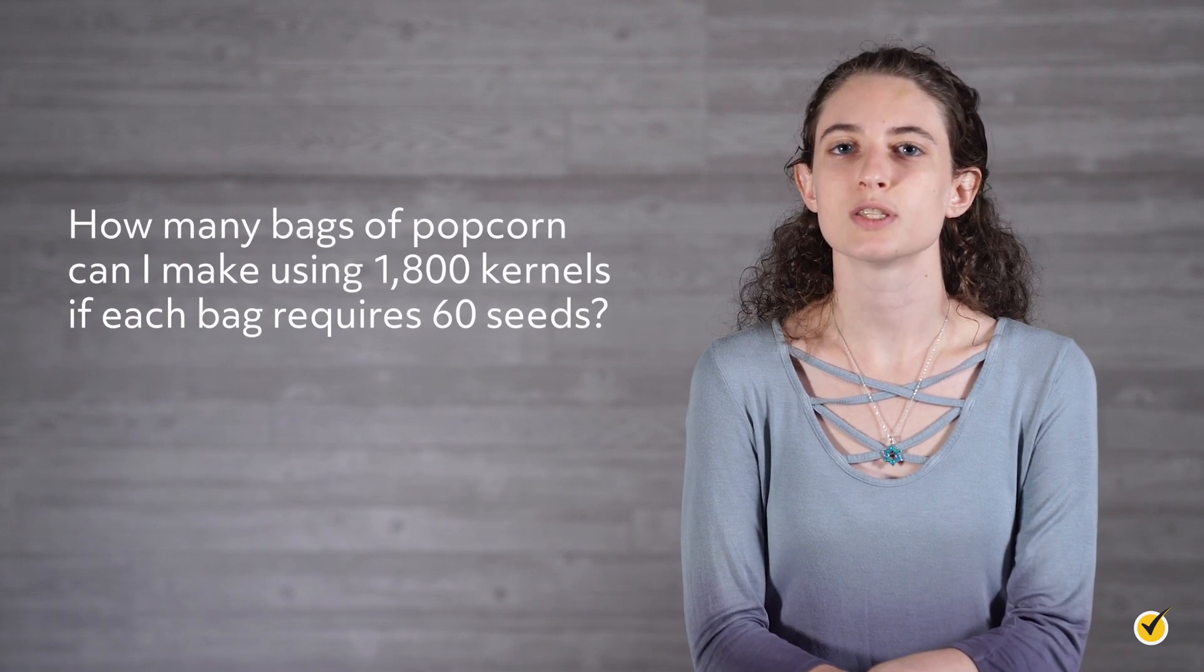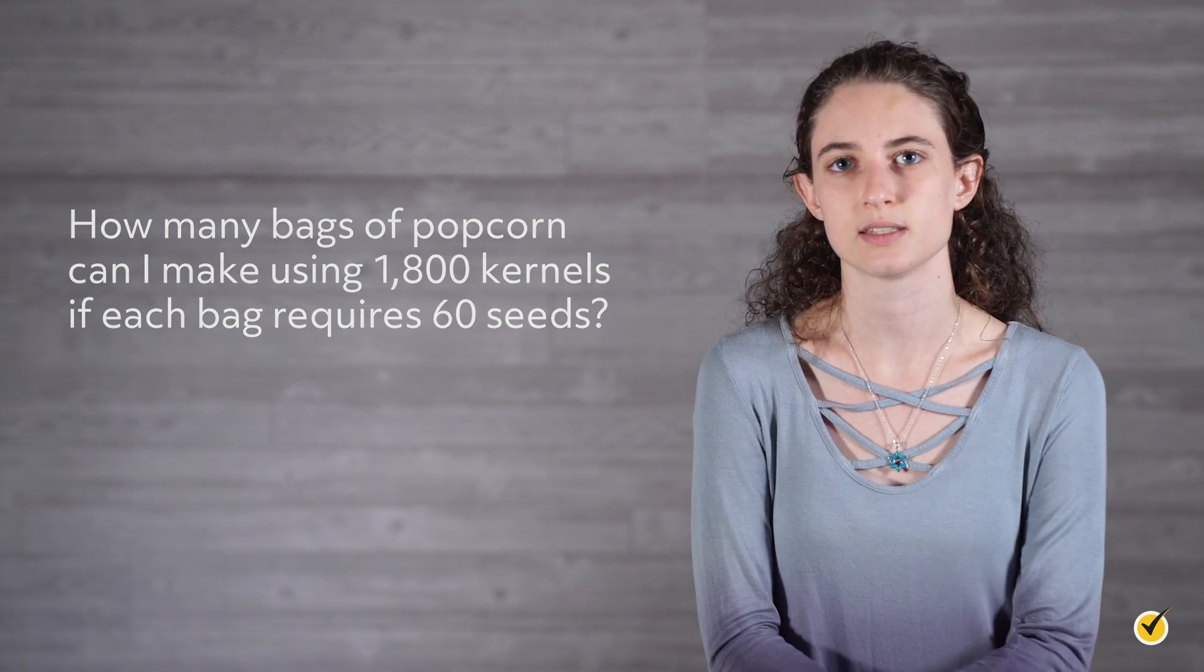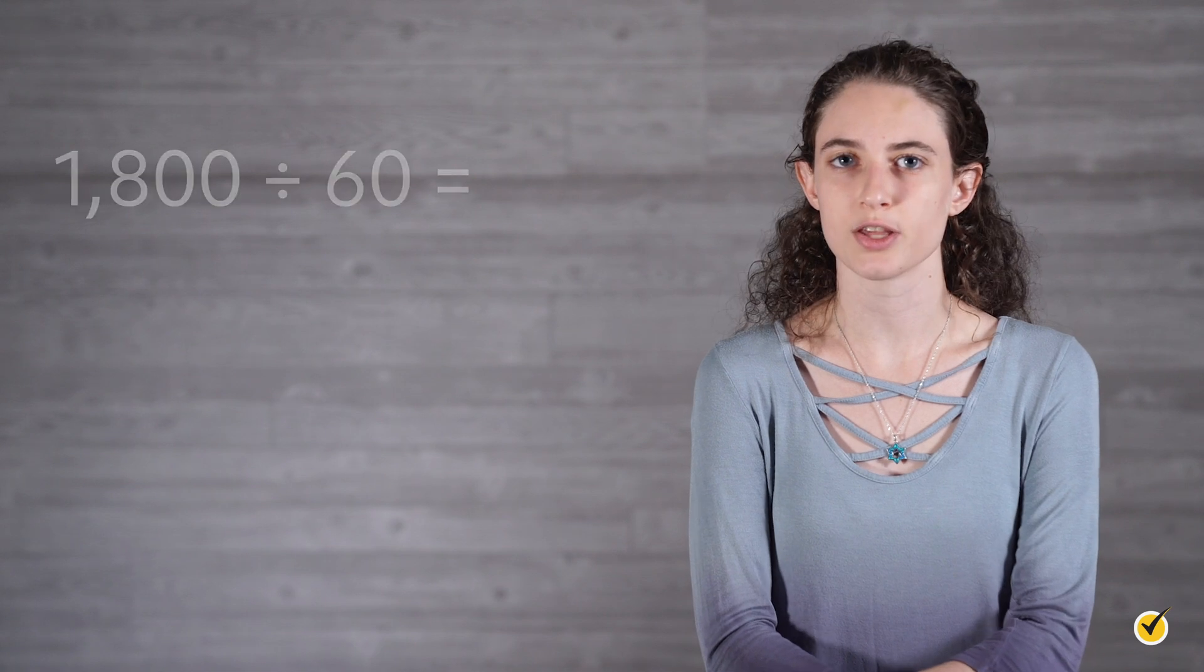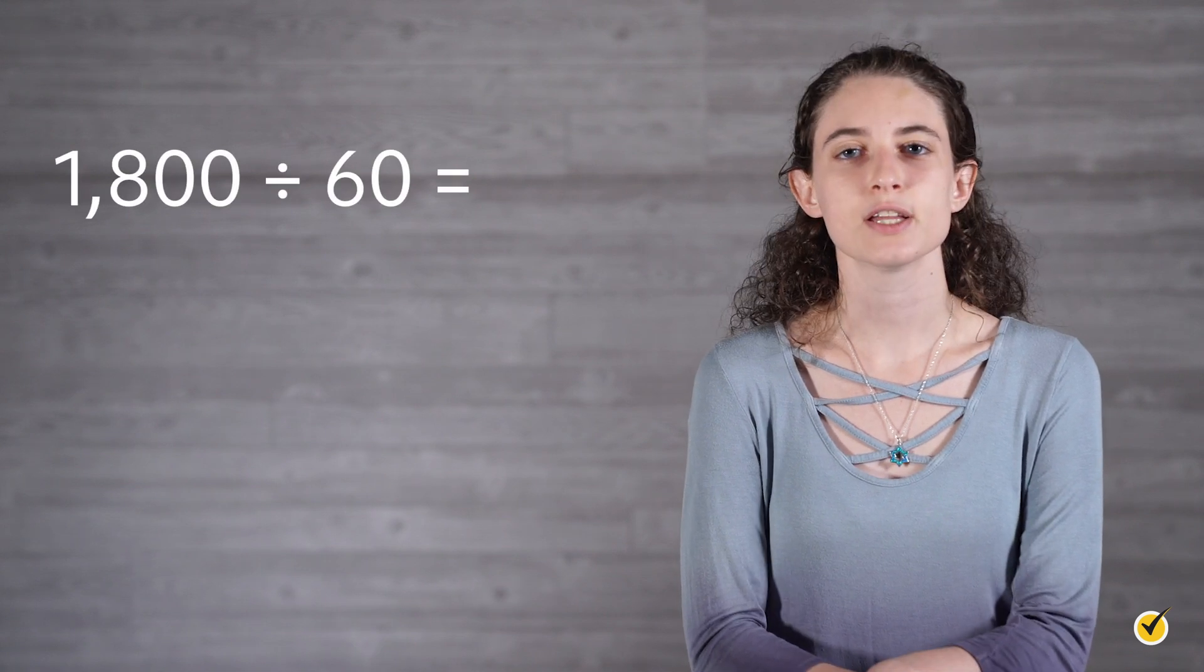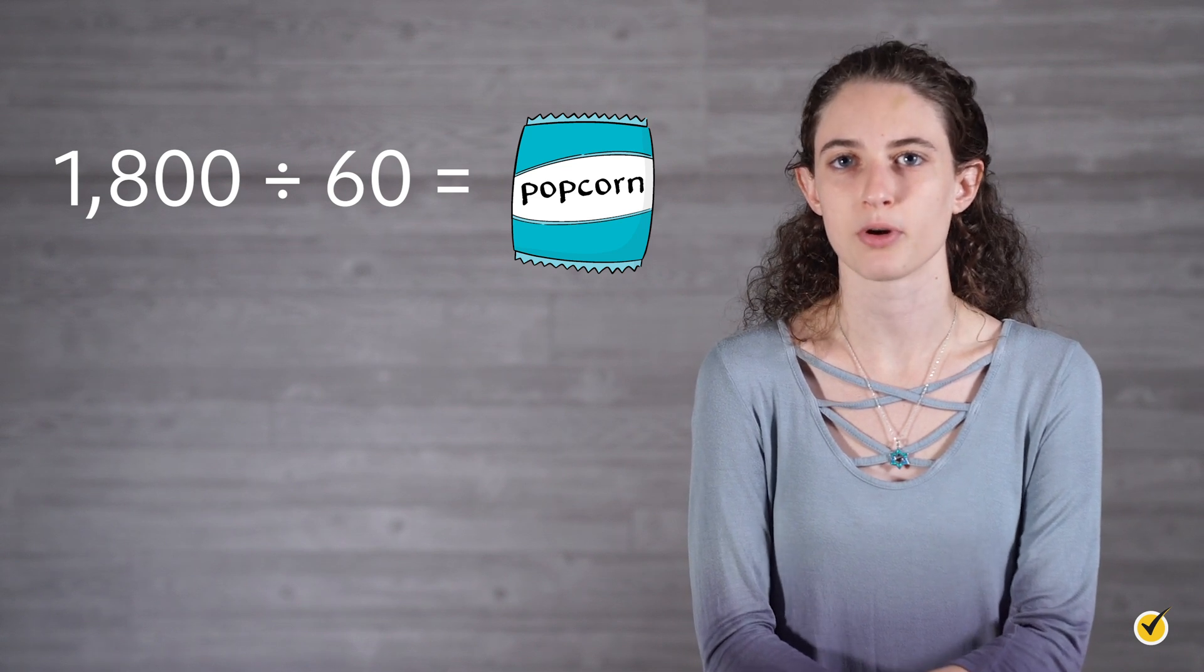Our last operation, division, can be considered multiplication's opposite. When we use division, we are essentially splitting up a large group into smaller subgroups. For our popcorn example, we can use division to answer the following question: How many bags of popcorn can I make using 1,800 kernels if each bag requires 60 seeds? This situation requires us to divide the large value, 1,800, into groups of 60. Each smaller subgroup will now represent a bag of popcorn.